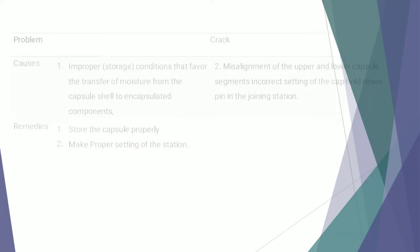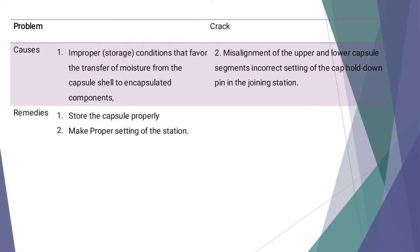The next defect is crack. Cracks are caused because of improper storage conditions that favor the transfer of moisture from the capsule shell to the encapsulated component. It may also result from misalignment of the upper and lower capsule segments, and incorrect setting of the cap hold-down pin in the joining station. It can be overcome by storing the capsules properly and by making proper setting of the station.